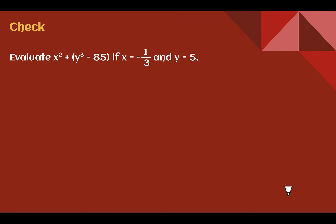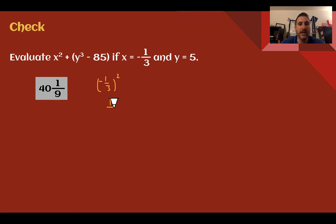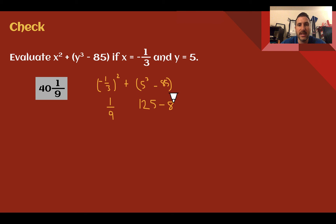Check your understanding: Evaluate the expression if x equals negative 1 third and y equals 5. Pause the video now and complete the check. You should have got 40 and 1 ninth. Plugging in: x squared becomes negative 1 third squared, which is 1 ninth — a negative times a negative makes it positive. Plus y to the 3rd power: 5 to the 3rd power is 125, minus 85, gives 40. Adding together: 40 and 1 ninth. Note that the exponent part was computed before the parentheses in the explanation, though the final answer was not affected.